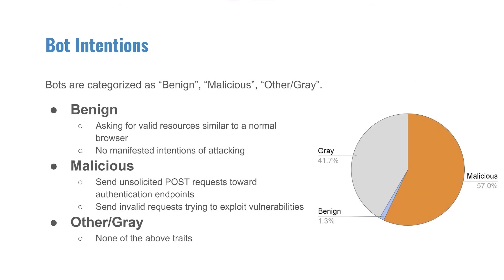In terms of bot intention, we categorize bots as benign, malicious, and gray by their intention and activities. Benign bots request valid resources similar to a normal browser, while malicious bots send unsolicited POST requests toward login endpoints or send invalid requests trying to exploit vulnerabilities. When they cannot be categorized as either benign or malicious, they fall into the gray category. Overall, we have 57% malicious requests, 1.3% benign requests, and 41.7% gray requests.